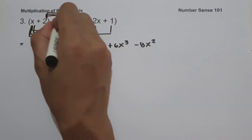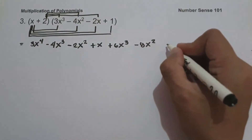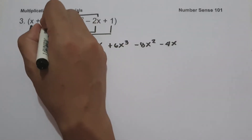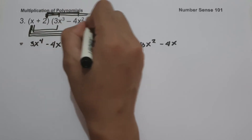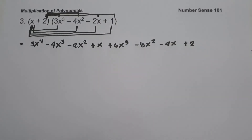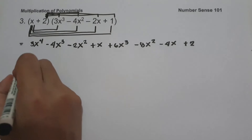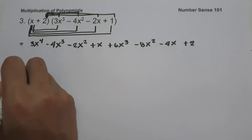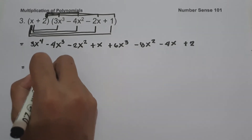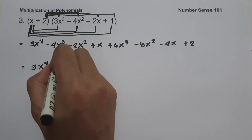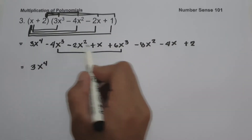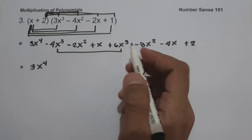Then x multiplied by negative 2x is negative 2x squared, and x multiplied by 1 is x. Then 2 multiplied by negative 2x is negative 4x, and 2 multiplied by 1 is simply 2. So let us combine like terms: 3x raised to 4, and then negative 4x cubed plus 6x cubed is 2x cubed.